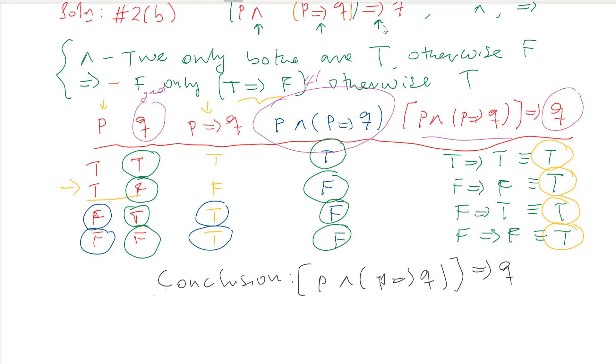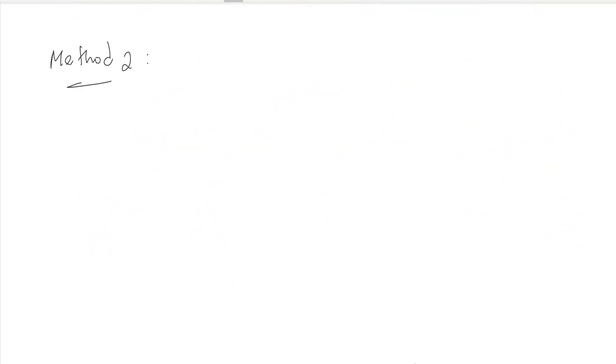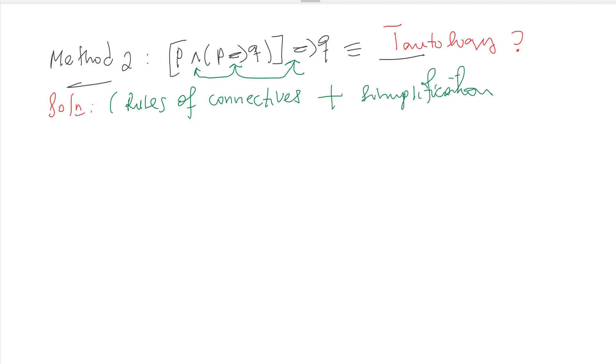[p ∧ (p→q)] → q is tautology. Later to algebraic method, we have to show that this is equivalent to tautology. So let's directly go to the solution.